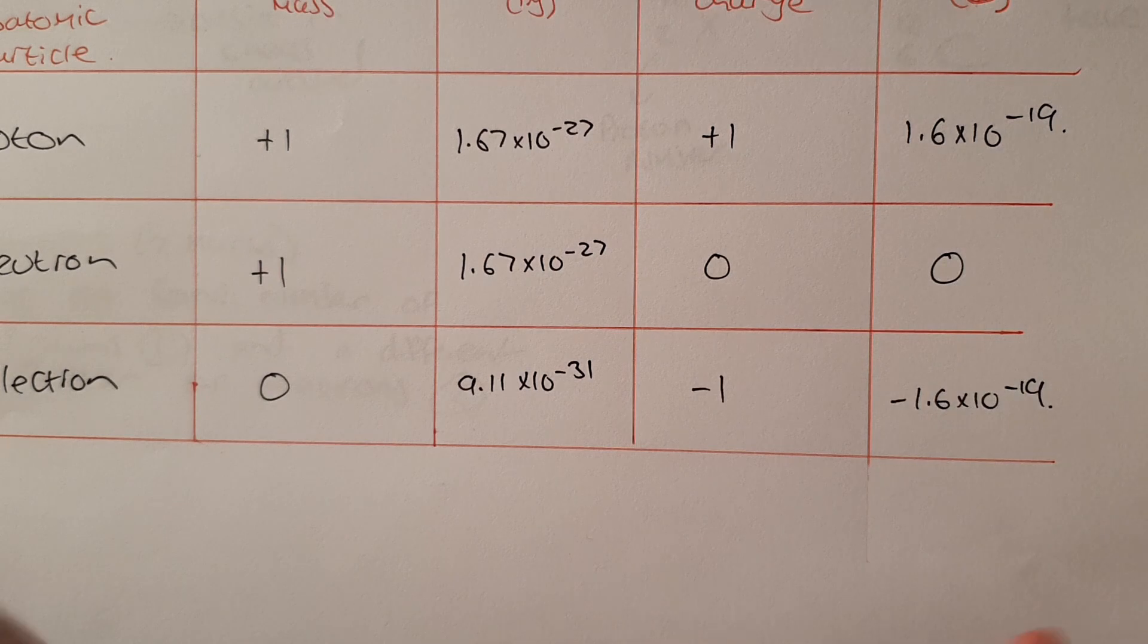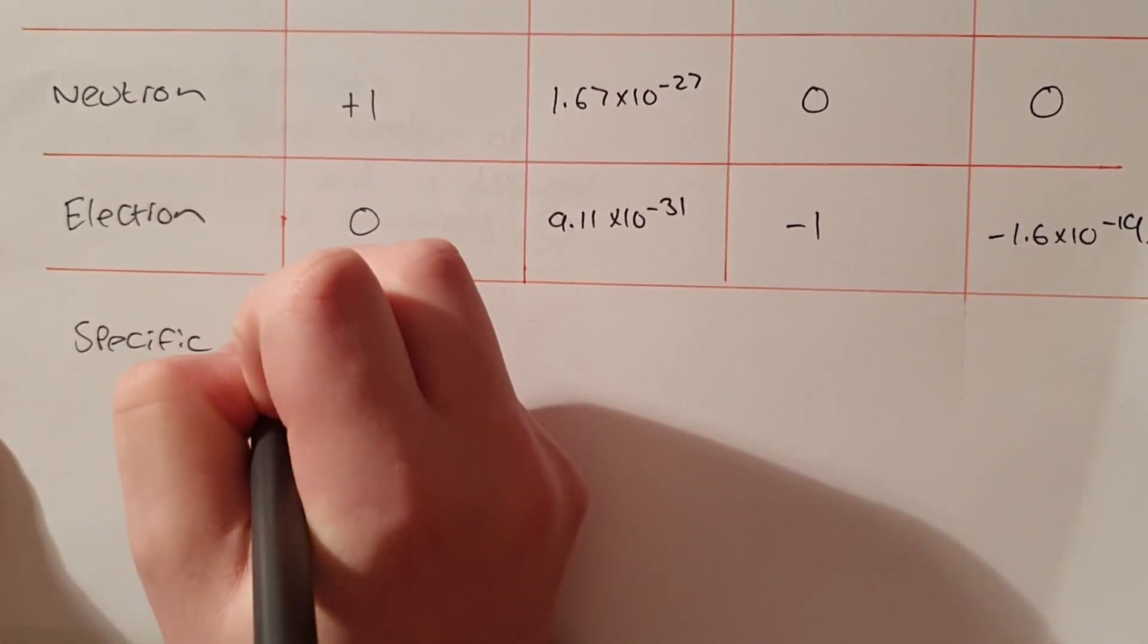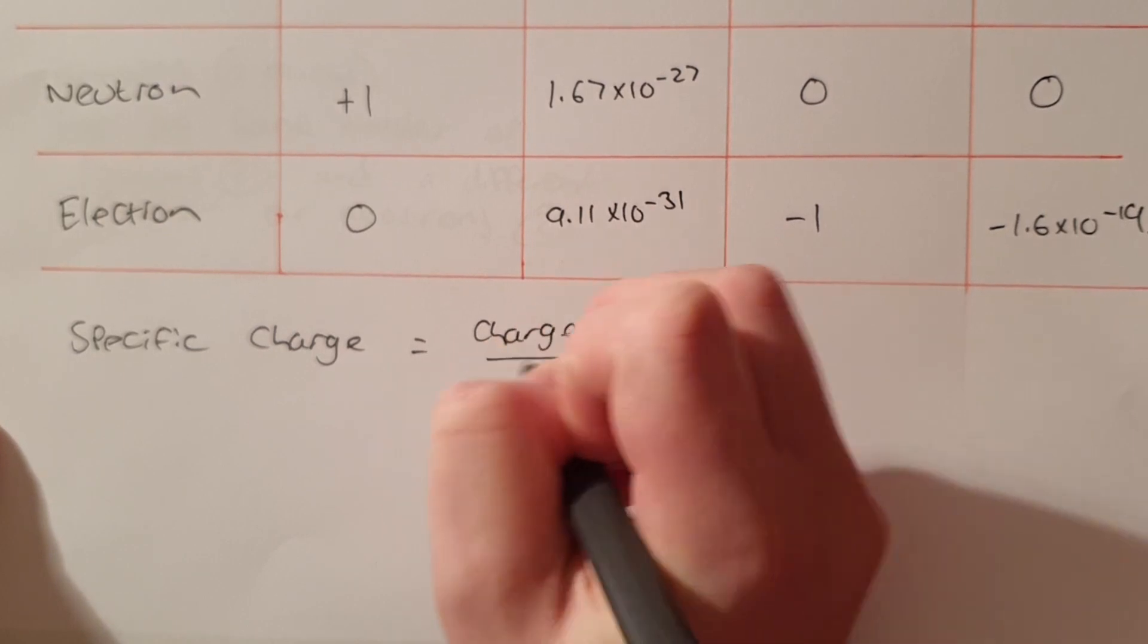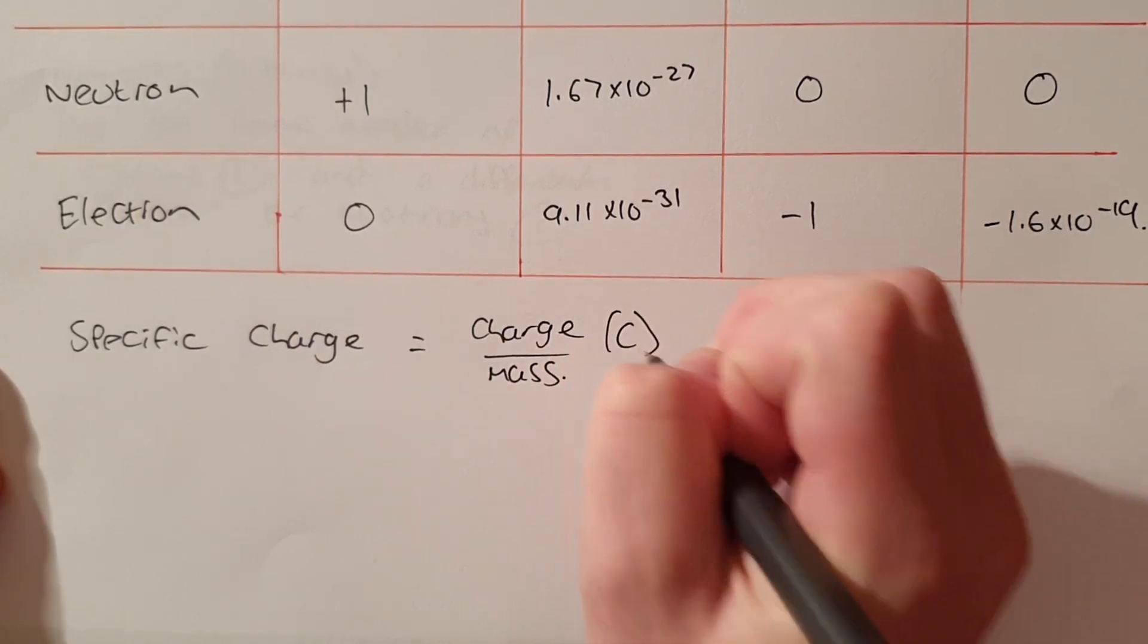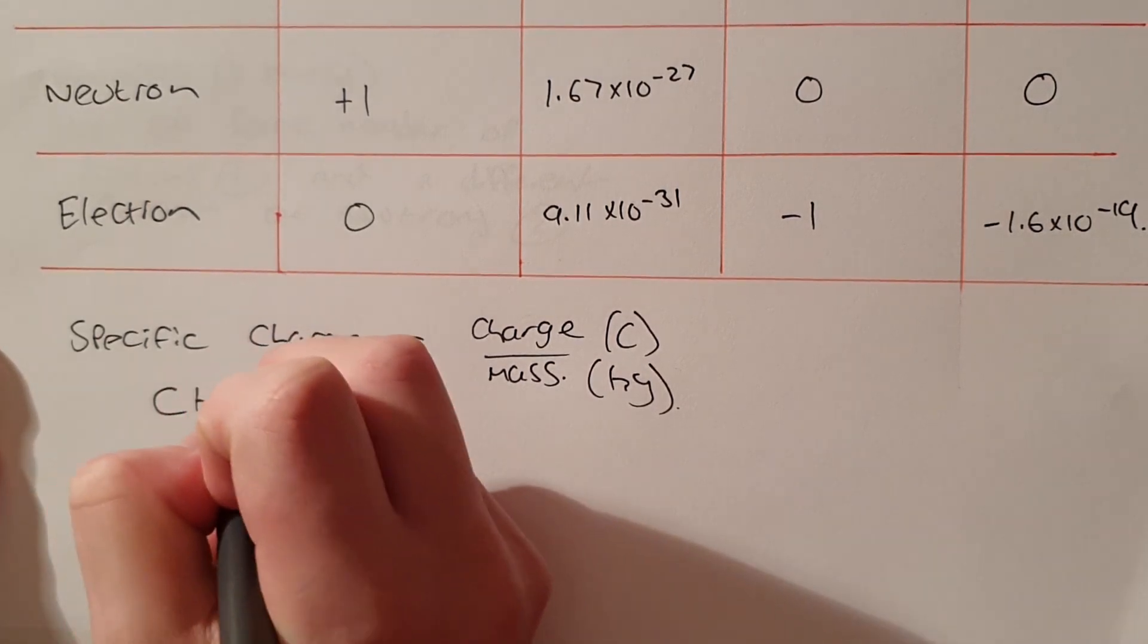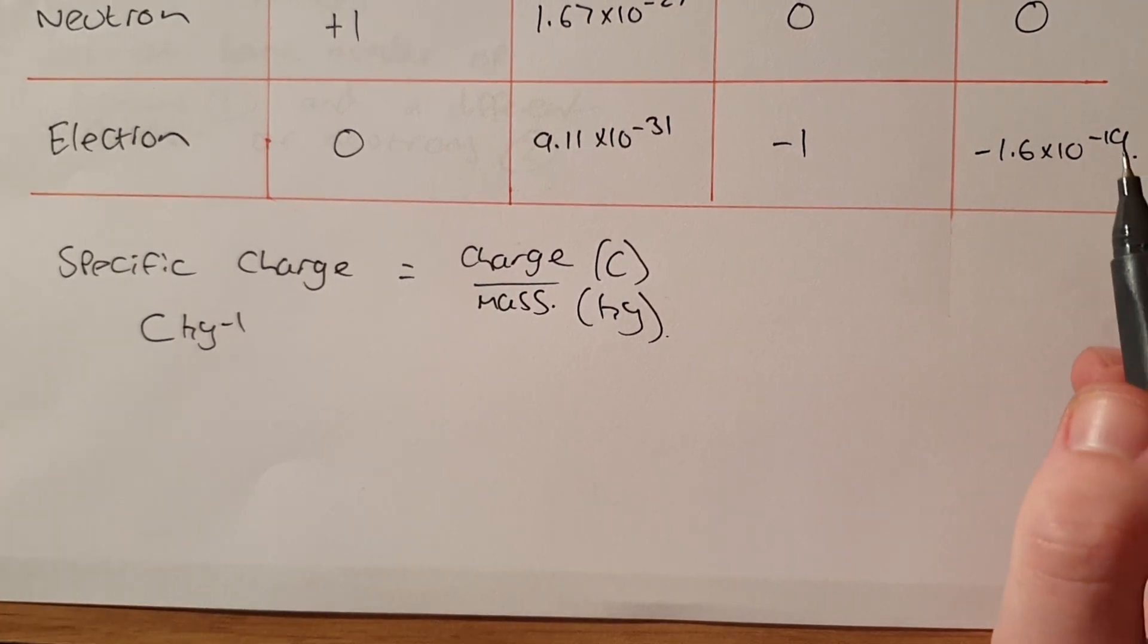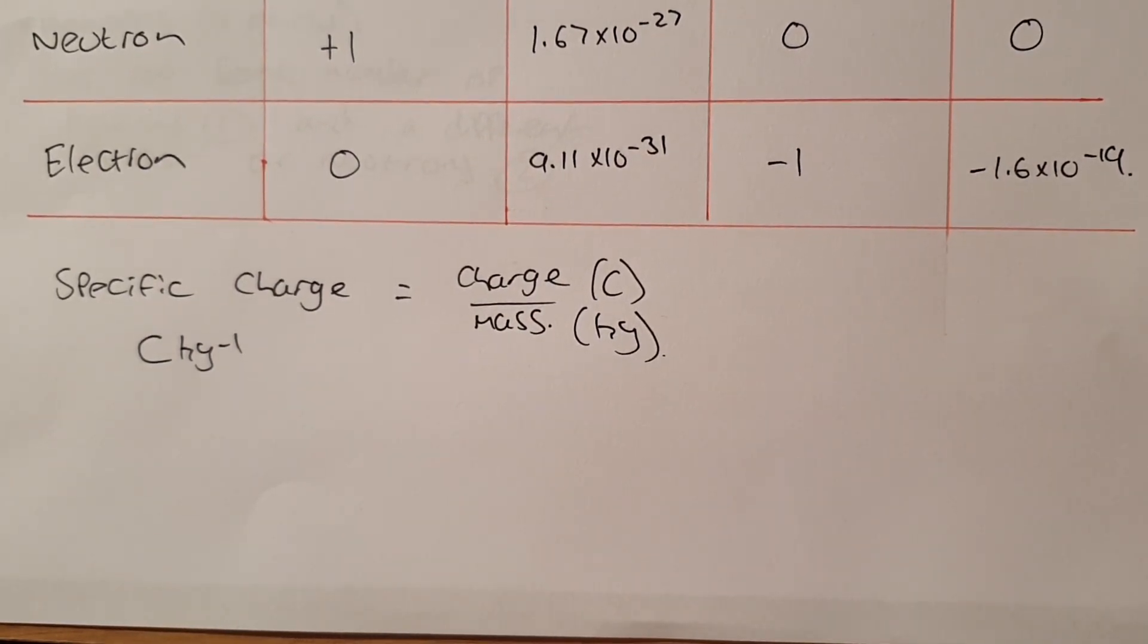And for A level in our first lesson we come across a new concept called specific charge. Now specific charge is important because it tells us the charge to mass ratio. Charge we know is measured in coulombs and we know mass is kilograms. That means our unit of specific charge is coulombs per kilogram. That's important because we often have to state the unit in the A level. You have to know this for ions, the nucleus, and different subatomic particles. I'm going to go through three examples today showing you how to do this calculation.